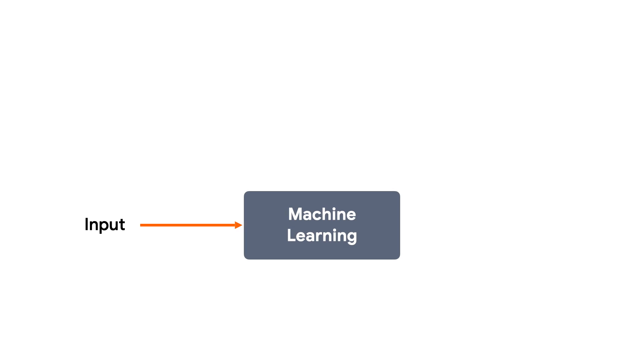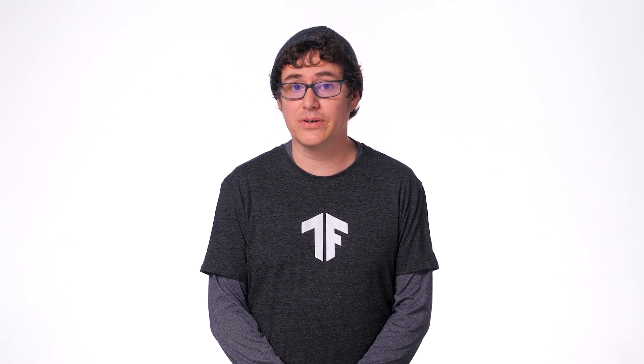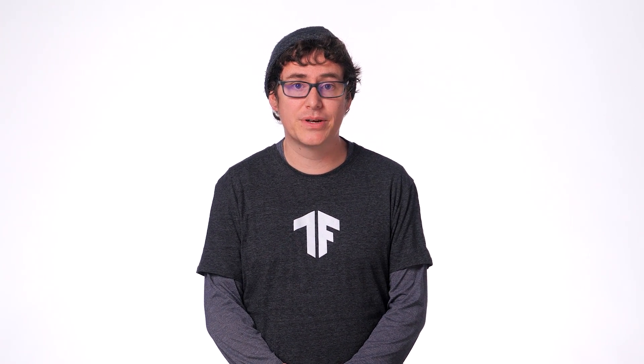With machine learning, you provide a set of known inputs and a set of known outputs, and then the computer tries to figure out what the function is that connects those two. This process is called training, and it's one of the core steps in machine learning. Without getting too far into the details, training involves solving a set of complex problems, including optimizing models to work on relatively restrictive hardware, using specific device hardware for acceleration, and ensuring your models work across multiple platforms, which is why we've created MediaPipe as a way to make these challenges a whole lot easier for our developers.